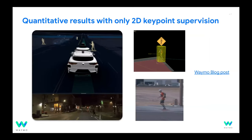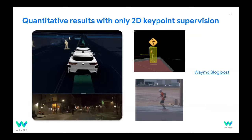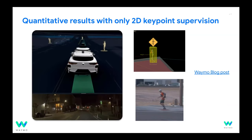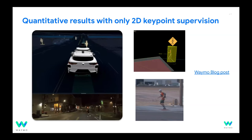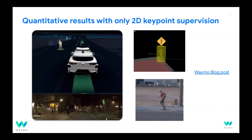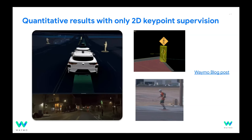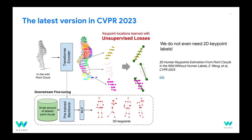These are examples of 3D keypoint predictions supervised directly by 2D labels. There is a blog post with more details on how we use this in production. At this year's CVPR, we further developed the model to explore whether 2D keypoints are even needed, using unsupervised losses — feel free to join the poster session for details.